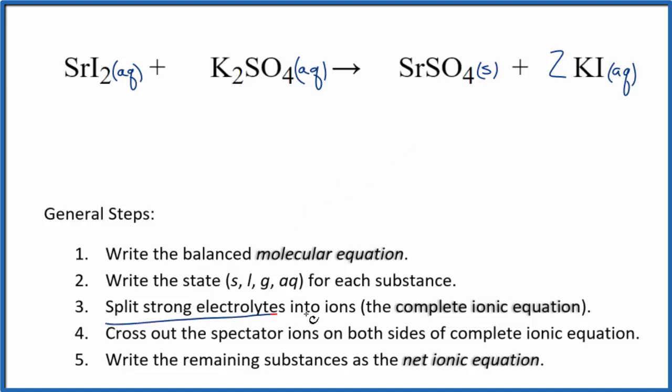Now we can split the strong electrolytes into their ions, and that'll give us the complete ionic equation. Strontium on the periodic table is in group two, so it has a two plus ionic charge. The iodide ion, one minus. We have two of them. So we'll have Sr2+, the strontium ion. I'll write the states later. Plus two iodide ions, 2I-.